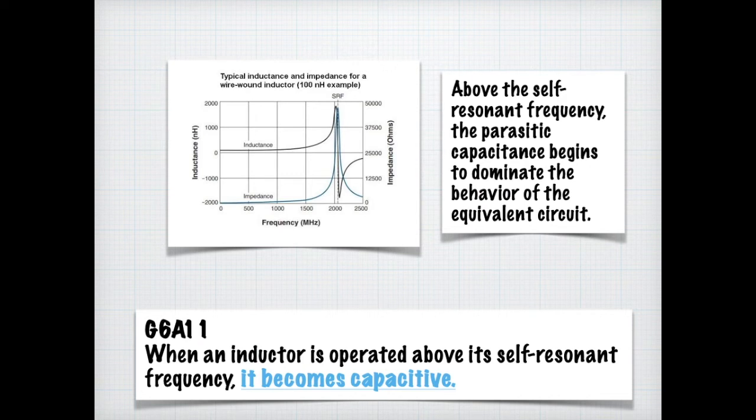There's a test question that confuses some people. It's what happens when an inductor is operated above its self-resonant frequency. If you recall, resonance is where something resonates. It vibrates at a particular frequency or works at a particular frequency. Above a self-resonating frequency, parasitic capacitance becomes dominant and it just takes over. So for the exam, you need to know that when an inductor is operated above its self-resonant frequency, it becomes capacitive.